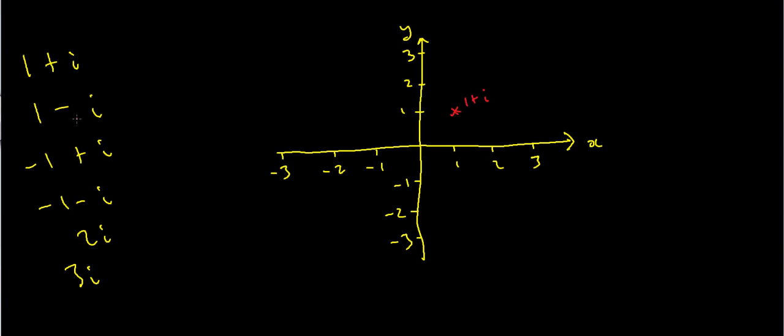How about the number 1 minus i? Well that means I go across 1 and down 1. Because the imaginary part of this number is minus 1. So I go across 1 and down 1. So this is 1 minus i. So I've done these two.